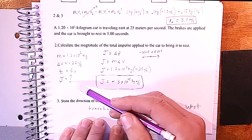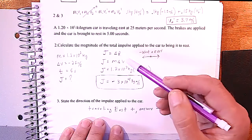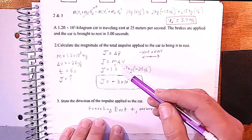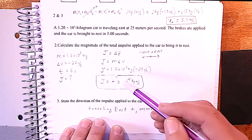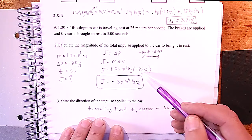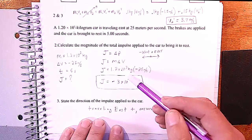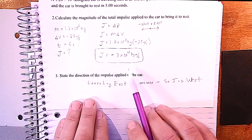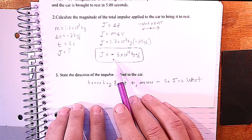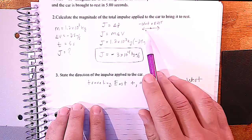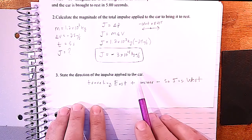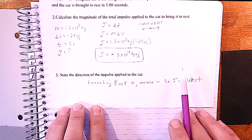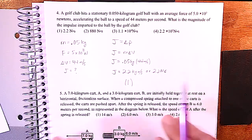They want us to find the impulse. It looks like an F·t problem, but in actuality it's an m·Δv problem. They gave us the mass and the change in velocity, so all we have to do is find the change in momentum, which equals the impulse. Since the impulse comes out negative and we called west negative, the impulse is to the west.